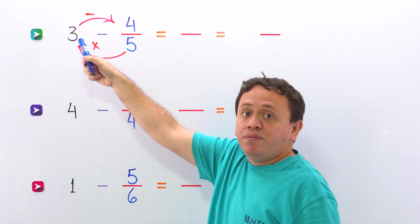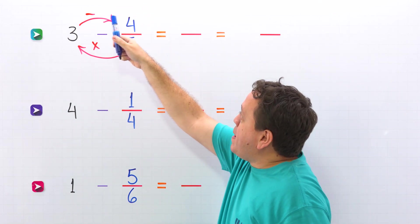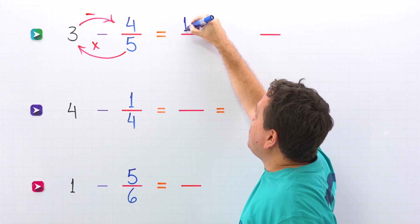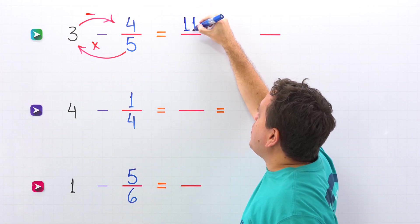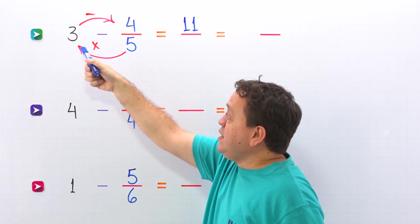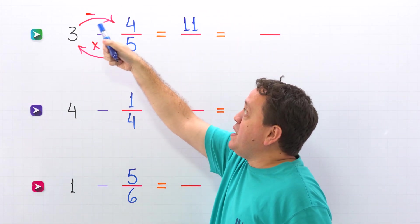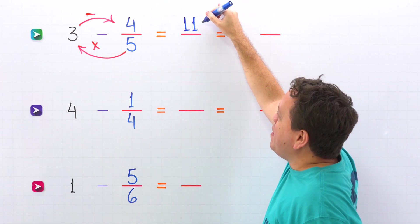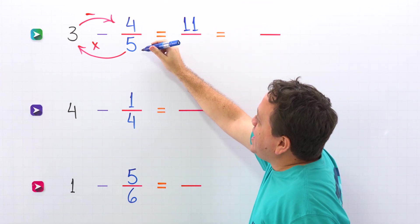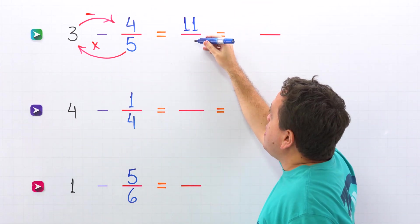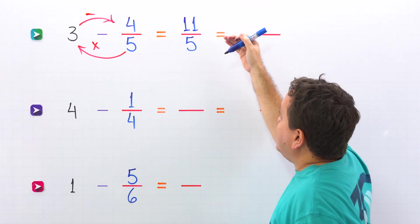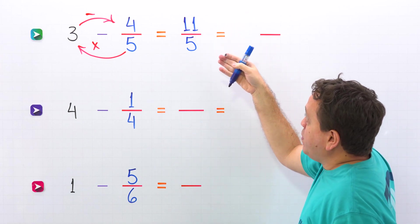5 times 3 is 15, minus 4 gives us 11. And then we keep the denominator of the fraction, 5 in this case. The answer is 11 fifths.